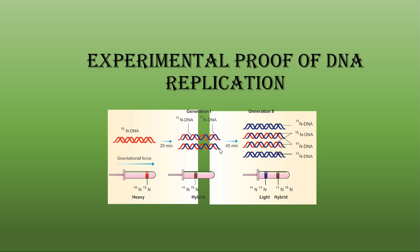The blue color represents nitrogen-14 DNA. Two strands form an intermediate strand after 20 minutes. After 40 minutes — the second generation — the DNA divides and produces four DNA strands. Here you can see nitrogen-14 DNA is formed, called normal DNA with light isotope, meaning its density is very less. Two intermediate strands are also present: one red color is nitrogen-15 heavy isotope, and the blue color is nitrogen-14 labeled DNA.